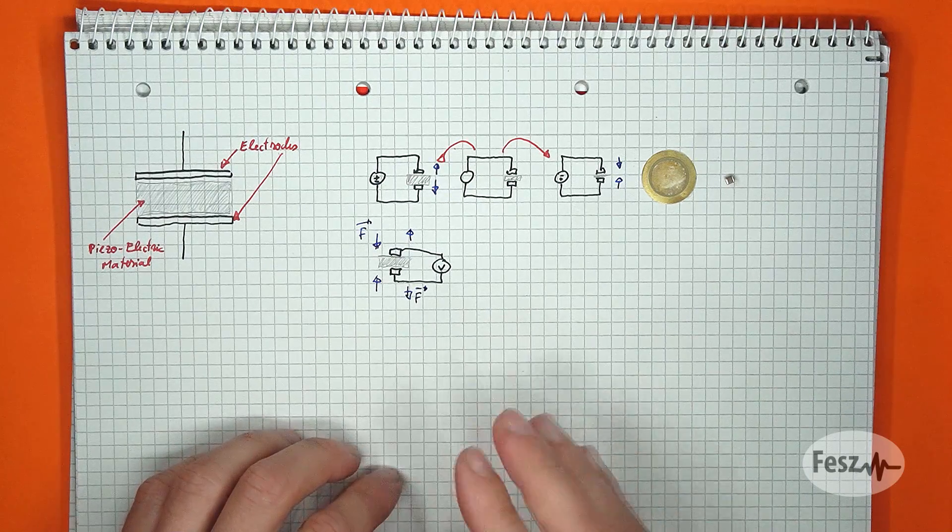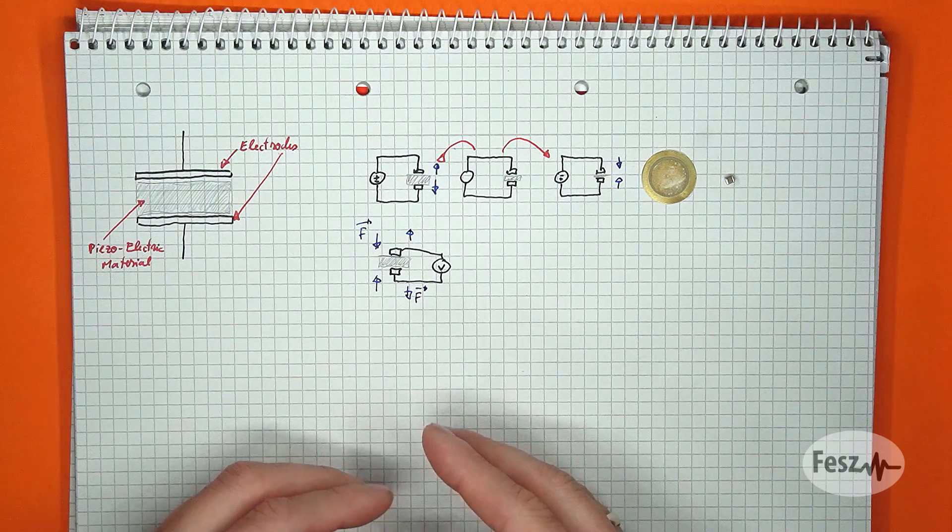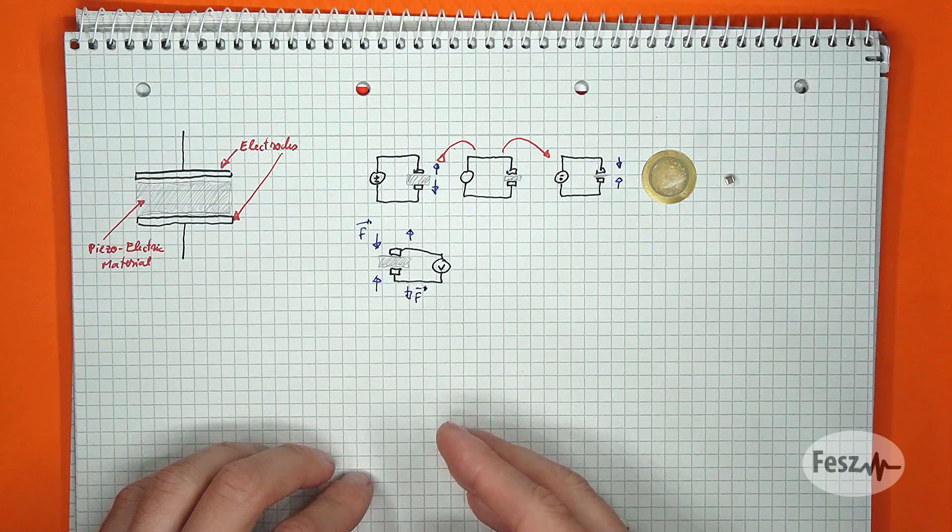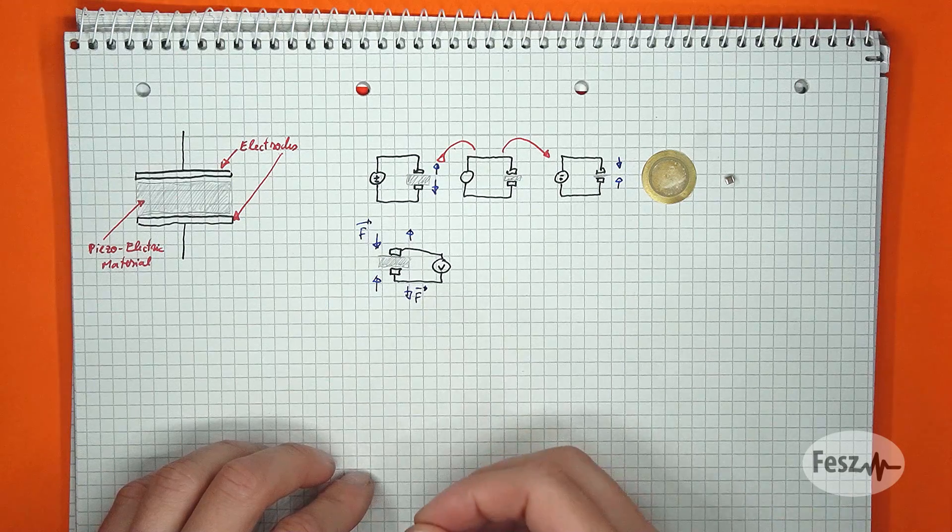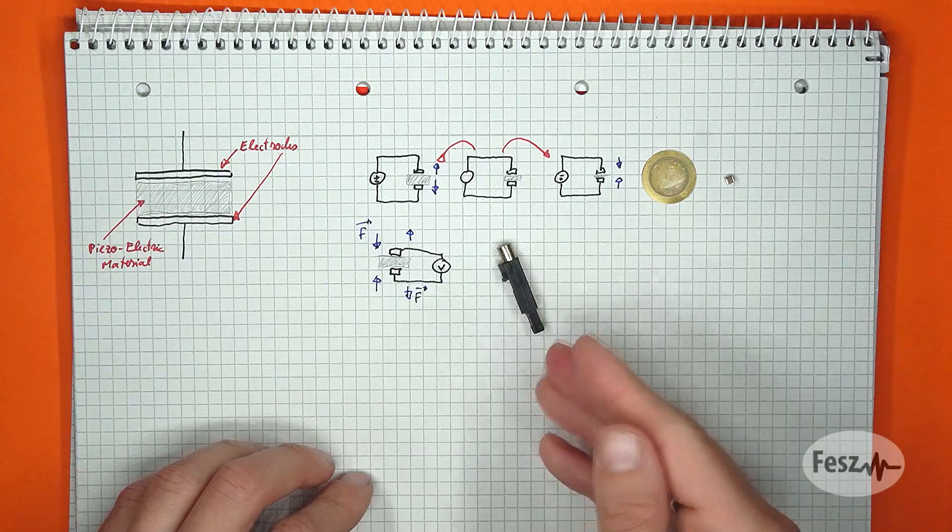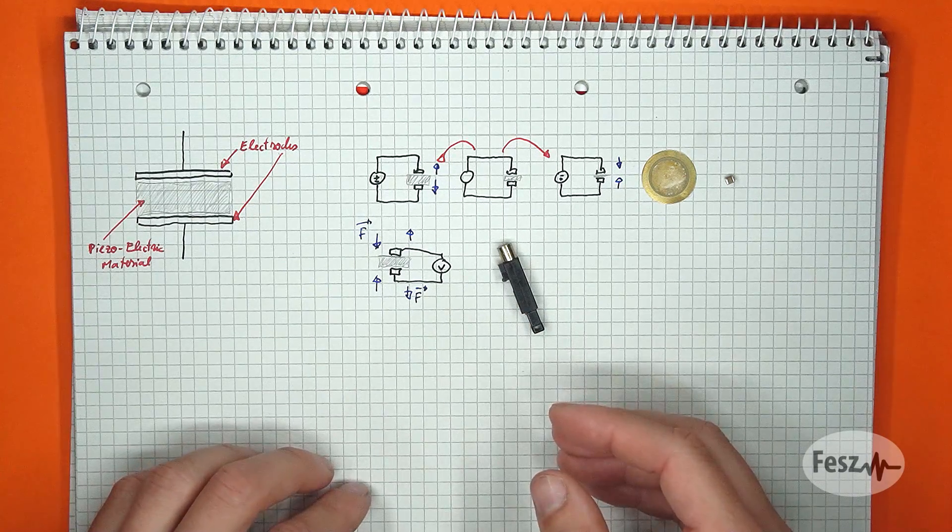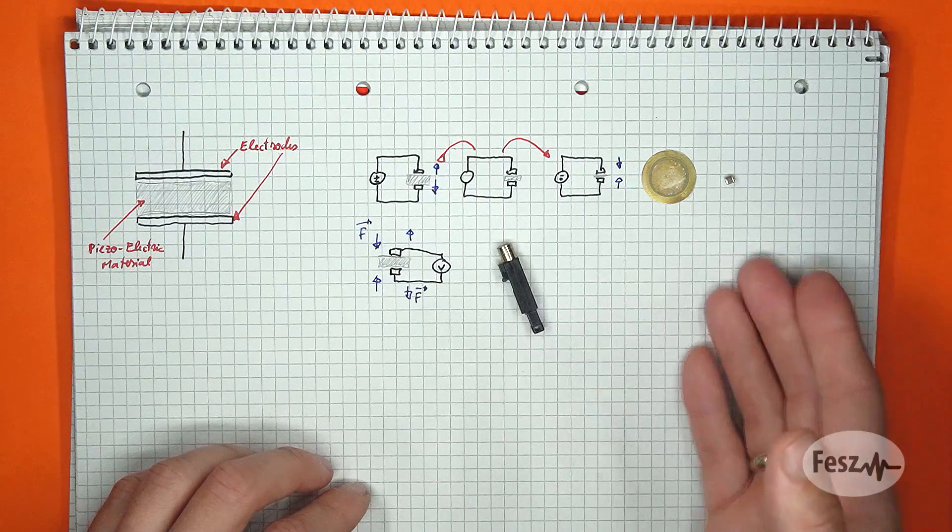And this material property can also be used the other way around, so when an external mechanical force is applied to the piezoelectric material, an electric potential is created. One use case for this is the lighter. So here, an impact applied to a piezoelectric crystal generates a momentary spark needed to, well, light the lighter.